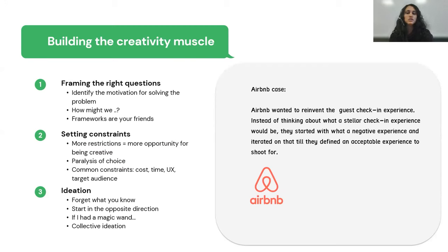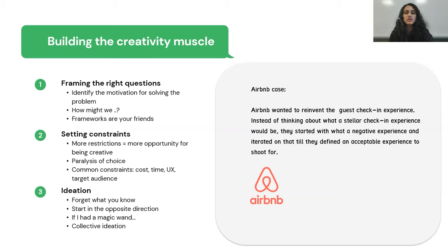Some ways to force this is to start in the opposite direction, like Airbnb did. They wanted to design the best check-in experience. Instead of starting from their current understanding of the check-in experience and adding on features, they first defined what a horrible check-in experience would look like, what an extremely excellent check-in experience would look like, and then found the middle ground of what they thought would be an acceptable potential five-star experience.